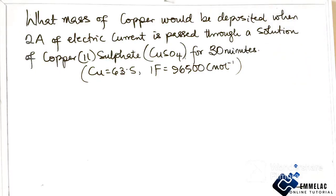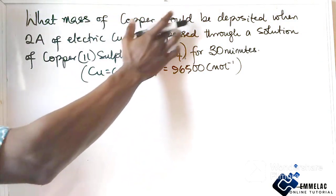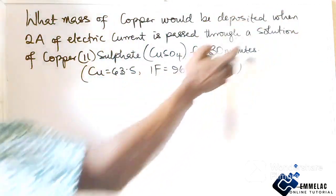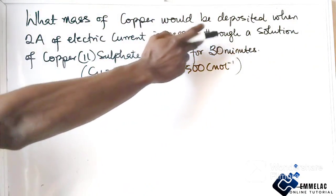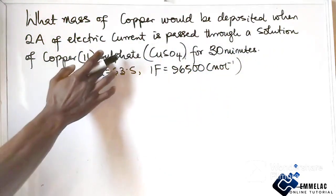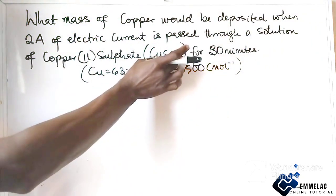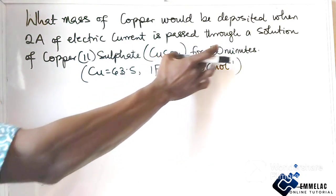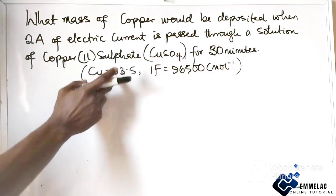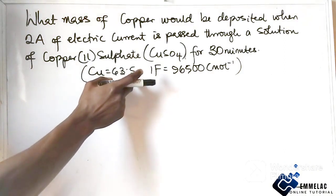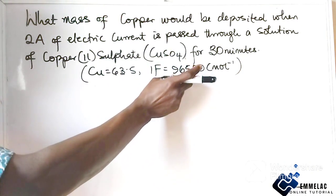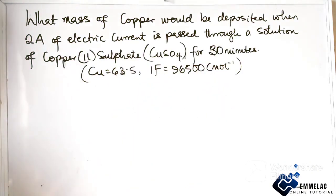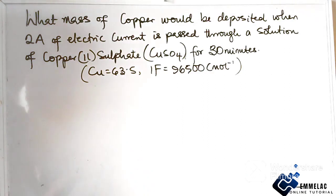Welcome to MLAC online tutorial. The question asks: what mass of copper could be deposited when two amperes of electric current is passed through a solution of copper sulfate for 30 minutes? We are given that the relative atomic mass of copper is 63.5 and one Faraday of electricity equals 96500 coulombs per mole.